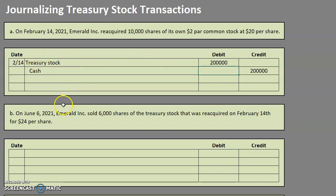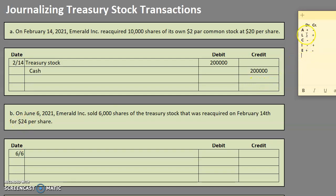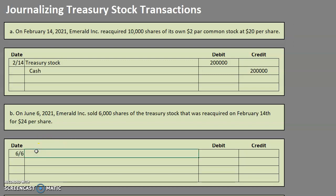Now let's take a look at what it would look like once we decide to sell some of those shares. On June 6th, 2021, we decided to sell 6,000 shares of the treasury stock that was previously reacquired, and we're now selling it for $24 per share. We are selling this treasury stock for $24, which would be cash. Cash is going up; cash is an asset, so to make it go up, we will debit cash — $24 per share for 6,000 shares.